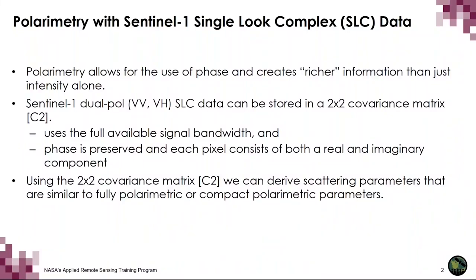Polarimetry allows for the use of phase and creates richer information than just intensity alone. Sentinel-1 dual-pol VV/VH SLC data can be stored in the 2x2 covariance matrix (C2 matrix), which uses the full available signal bandwidth with phase preserved, and each pixel consists of both a real and imaginary component. Using the C2 matrix, we are able to derive scattering parameters similar to fully polarimetric or compact polarimetric parameters. We call these pseudo-polarimetric parameters, as they are not as rich as those from fully polarimetric data.